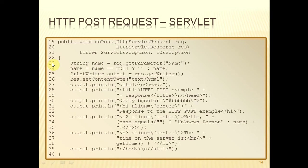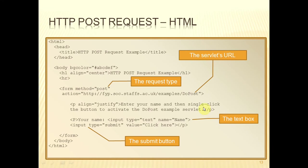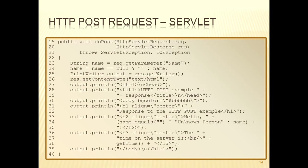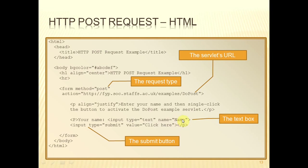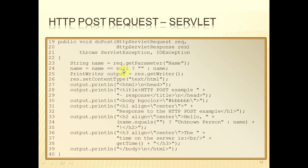Once line 23 is executed, whatever the user typed is stored in the variable 'name'. The name used in getParameter must have exactly the same spelling with exactly the same mix of uppercase and lowercase letters as defined in the HTML. One common early mistake is forgetting to ensure the spelling matches between line 23 and the form. We then test if name is null — if nothing was typed, we may get null back — and if so, set the variable to an empty string.